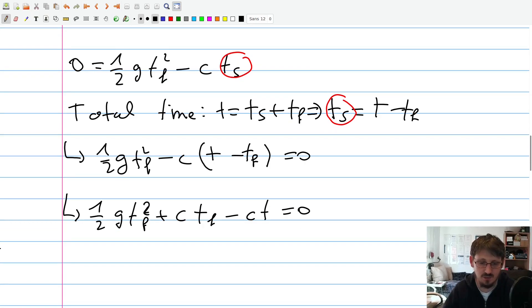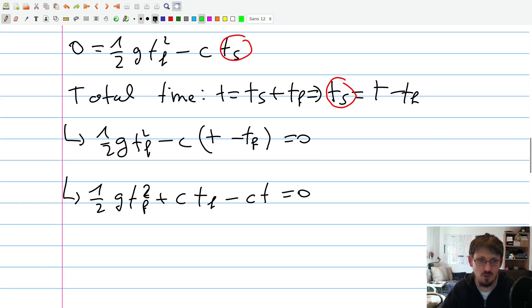And we have now, as you can see here, a quadratic equation in tf. So what we want to do now, we want to use pq formula in order to solve that. Before we do that, we first have to multiply this whole equation with 2 in order to get rid of this one half. And then we also have to divide it by g in order to get rid of that part. And then, at the end, when you do that, you get here tf squared plus 2 times c over g tf minus 2c t over g equals 0.